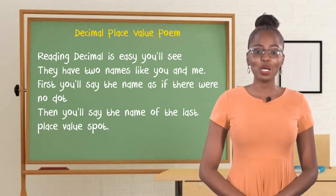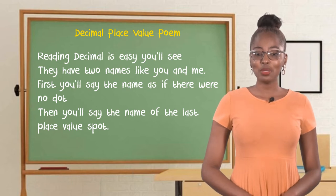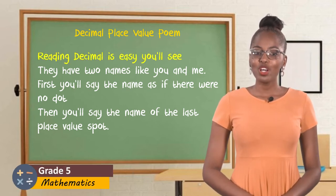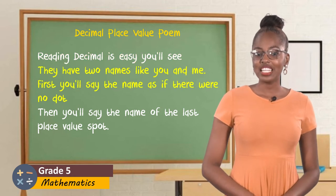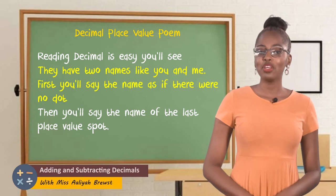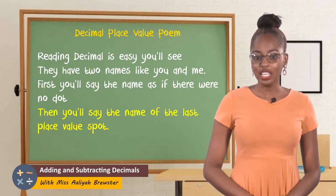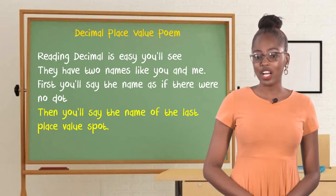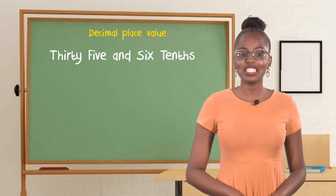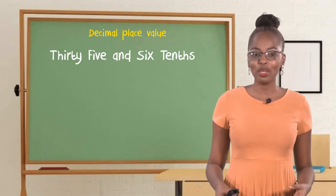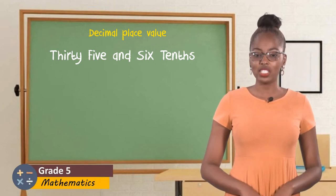Now I'll move on to saying a poem. The name of this poem is called Decimal Place Value. Reading decimals is easy, you'll see. They have two names like you and me. First, you'll say the name as if there were no dot. Then you'll say the name of the last place value spot. From the poem, you'll notice that the central topic there is place value and being able to read and write place values.